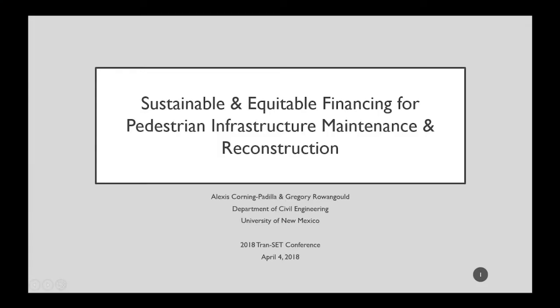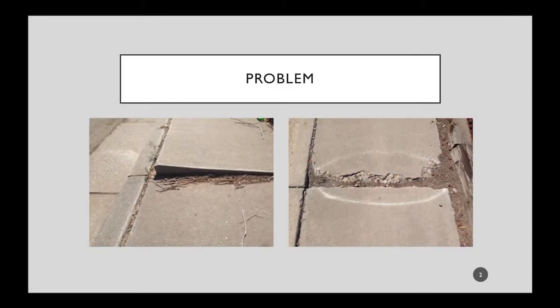Many of you have probably seen sidewalks that look something like this. There are slab displacements, large cracks, holes, places where the sidewalk may be crumbling, places where the sidewalk may not even exist — just a patch of dirt — and also places where there isn't a curb ramp for people, say in a wheelchair, to get from the street onto the sidewalk.